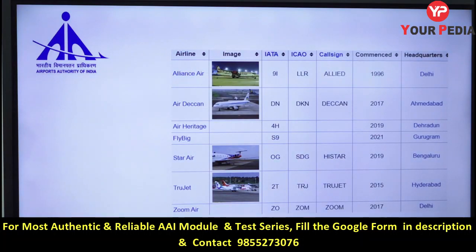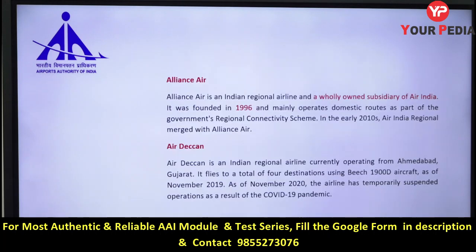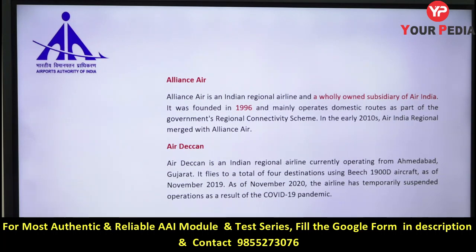There are some regional airlines — Alliance Air and Air Deccan. These operate between select cities. Alliance Air is a subsidiary of Air India and is used for regional connectivity. Air Deccan operates from Ahmedabad, Gujarat, and caters to domestic regional areas only, flying to a total of four destinations.